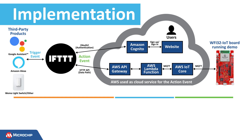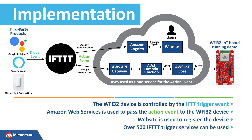For details about the setup using this implementation, be sure to check the link in the description of this video. Third-party devices or web services like Google Assistant, Alexa, or the Wemo light switch can send a trigger event to the IFTTT web platform on the internet. The IFTTT platform processes the trigger event and responds with the action event to AWS Cloud Services. AWS can then forward the action event to the WFI-32 IoT board with the MQTT protocol. According to the action event, the WFI-32 IoT device can either turn the board LED on or off.